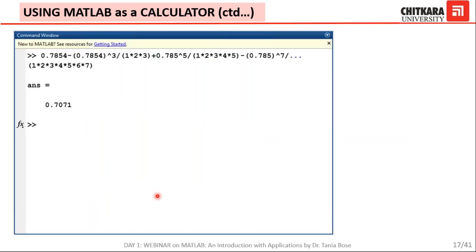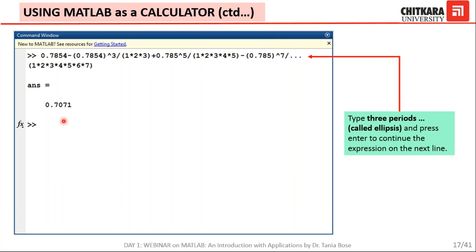Recalling the working rules for the command window — I mentioned ellipses. Here is an example: when a command or function is too long to fit in one line, after writing part of the command you type three dots and press enter, then continue the command on the next line. These three dots are known as ellipses. According to the order of preferences, the expression is evaluated and the final answer executed is 0.7071.